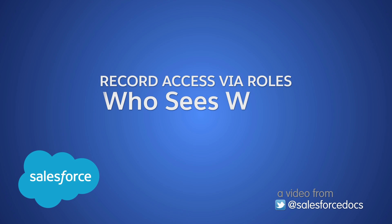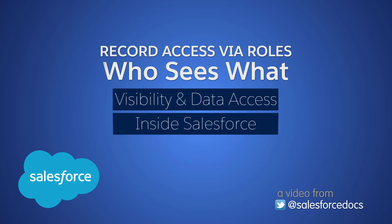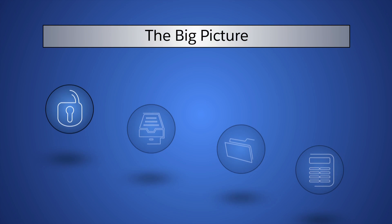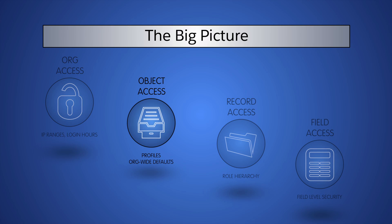Welcome to Record Access, one of the Who Sees What series. These videos provide the basics on visibility and data access in Salesforce. We've given users access to the organization by setting IP ranges and login hours, granted users access to objects through profile permissions, and set our organization-wide default sharing settings. Now it's time to talk about roles and the role hierarchy.